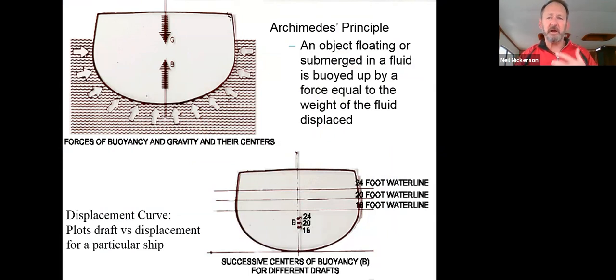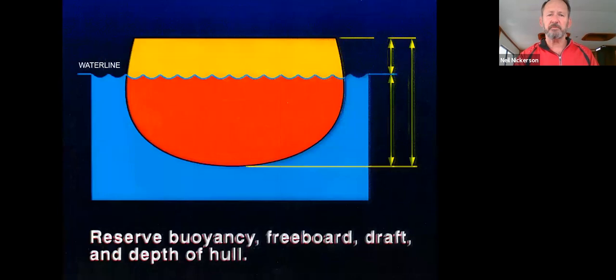Our Archimedes principle, once again, object floating on a submerged fluid buoyed up by a force equal to the weight displaced. This is just a kind of introduction, starting to get into displacement curves. We're not going to learn about those, but different draft levels change different displacement curves. I'm just showing this up to kind of have a review on everything from the waterline down is called draft again.